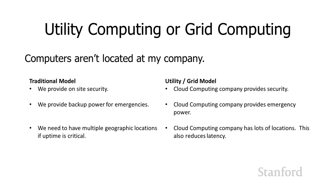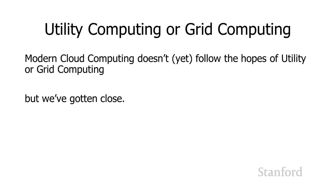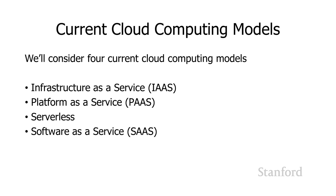Modern cloud computing doesn't yet have everything we hoped for with utility or grid computing, but we're getting pretty close. We're going to look at four different cloud computing models: Infrastructure as a Service (IaaS), Platform as a Service (PaaS), Serverless, and Software as a Service (SaaS).